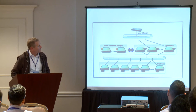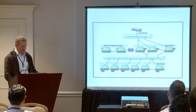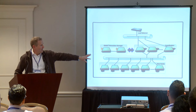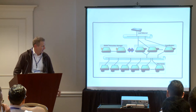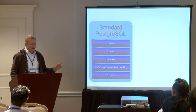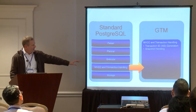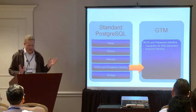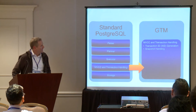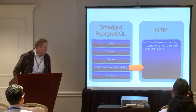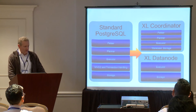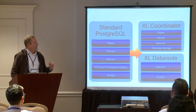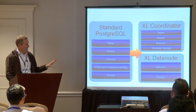Here's what the main components look like: there's a Global Transaction Manager, a coordinator layer, and data nodes where the user data is actually stored. We essentially took standard Postgres and broke out the transaction handling piece of it — the proc array — and moved that out to this new entity called the GTM, or Global Transaction Manager.